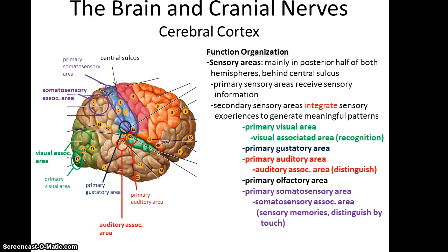The sensory information, after it's been received, is then integrated and made sense of in the secondary sensory areas. Near the primary visual area is the visual association area, which helps us actually recognize what we're seeing. The primary auditory area has the auditory association area, which helps us distinguish between sounds. And the primary somatosensory area has the somatosensory association area, where we often find memories linked to particular senses, and ways to distinguish between different kinds of touch — say, something rough versus something soft.